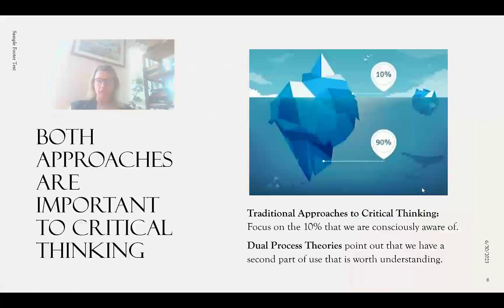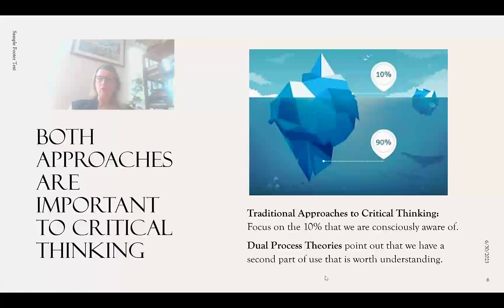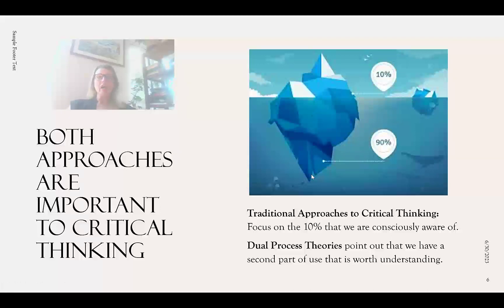Both approaches are important to critical thinking. Traditional approaches focus on the conscious part we are aware of. Dual process theories point out that we have a second, automatic part of the way we think — we're not necessarily aware of it — and it's worth understanding because it also affects our decisions, our beliefs, our aims, our goals, and our perceptions.